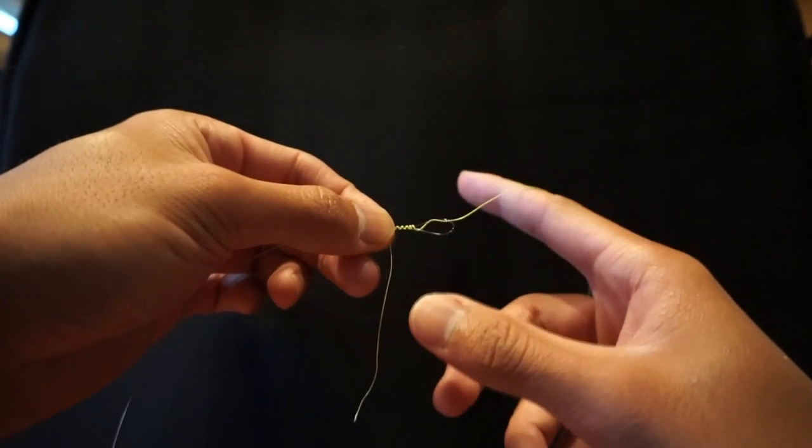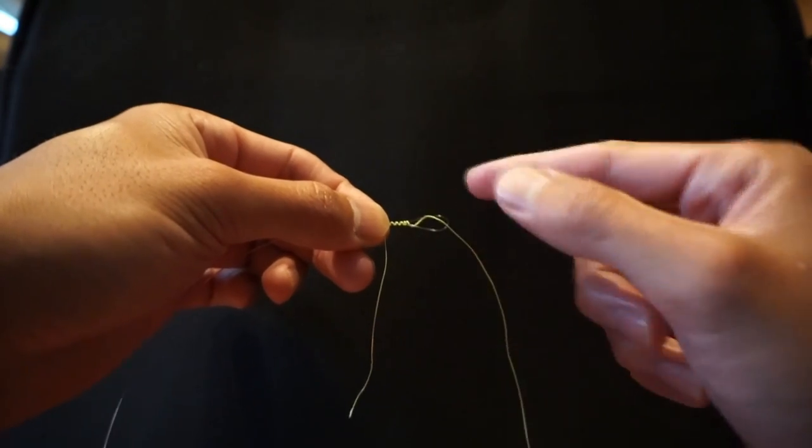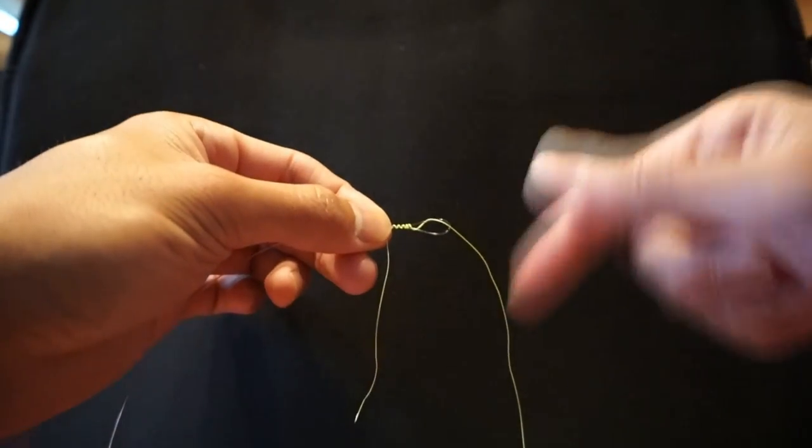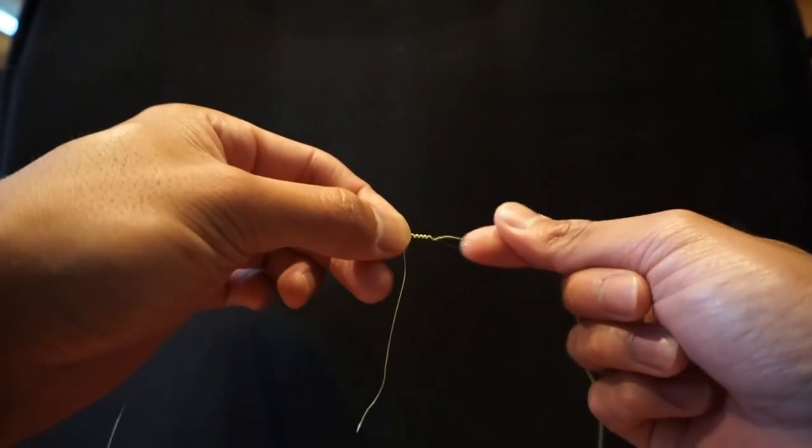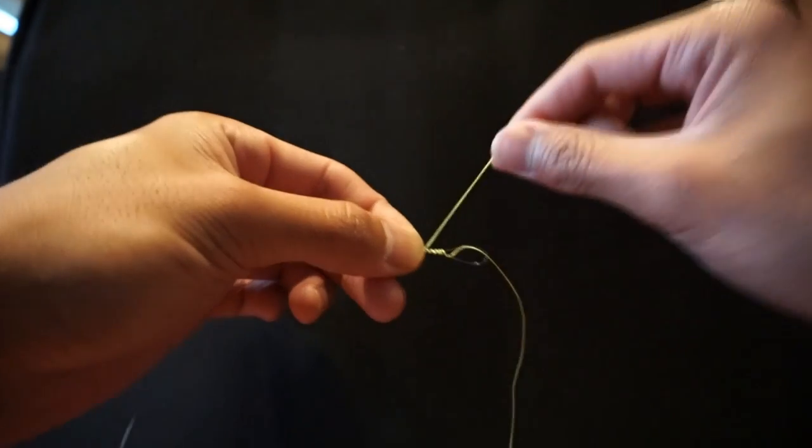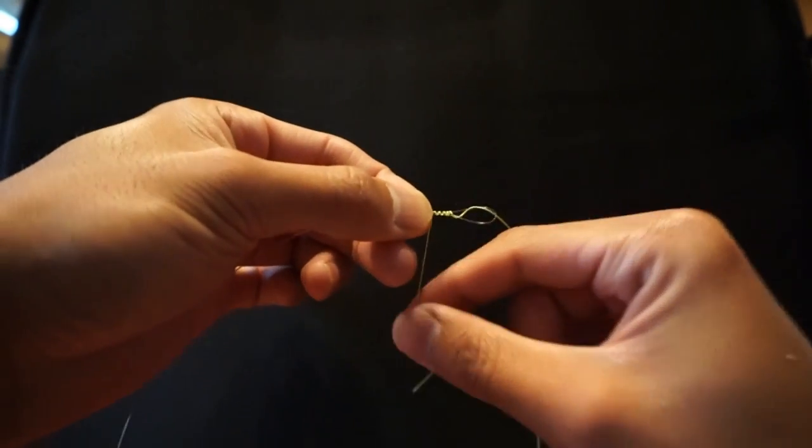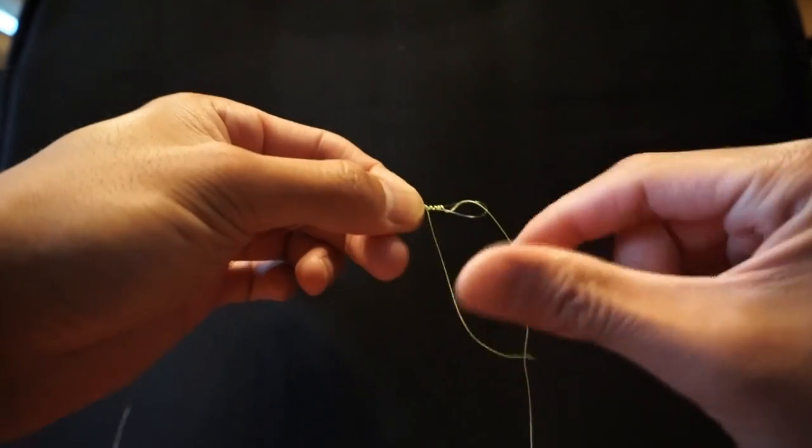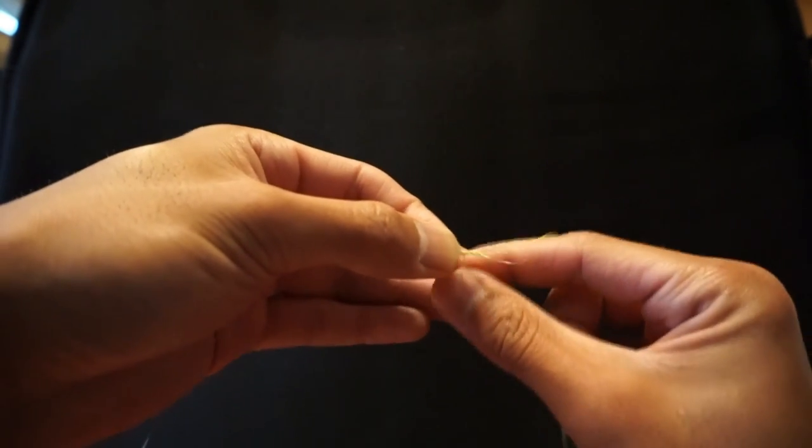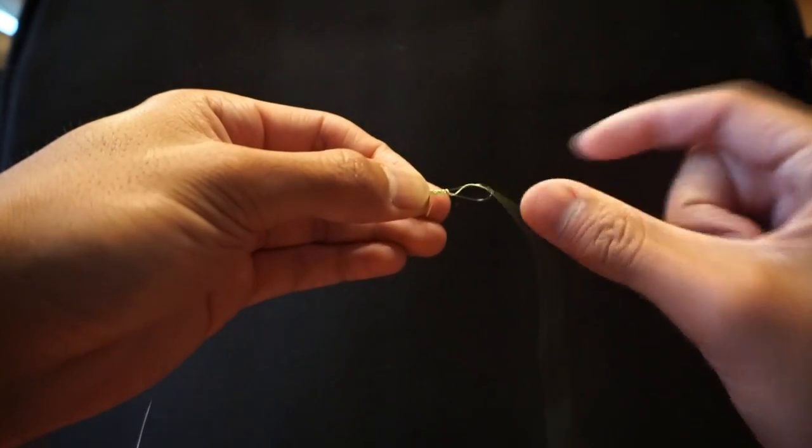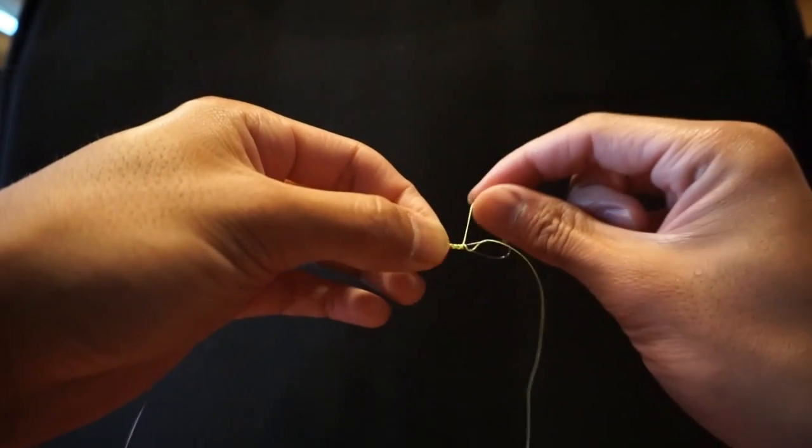Now we're going to need to go back up six times, weaving in between the loops we just made. So we're going to loop around, wrap around six more times, weaving in and out, or weaving just around these wraps we just made. Let's do it. So here's one, two, and you want to make sure it goes right in between. This is going to determine your knot strength and how smooth your knot looks.